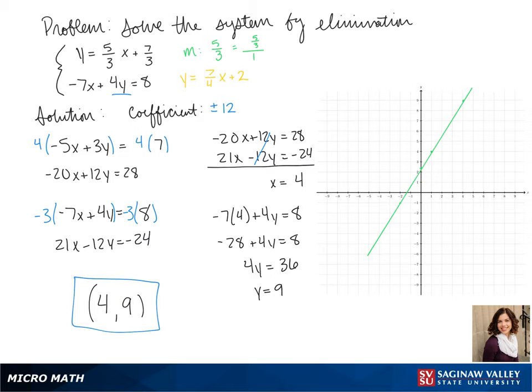Here's our second line in slope-intercept form. So we can plot our y-intercept, and then our other points, finding them with our slope, going up 7 and over 4, or down 7 and back 4. We connect those lines, and we see that our lines are pretty close, but they only cross at 1 point, at (4, 9).